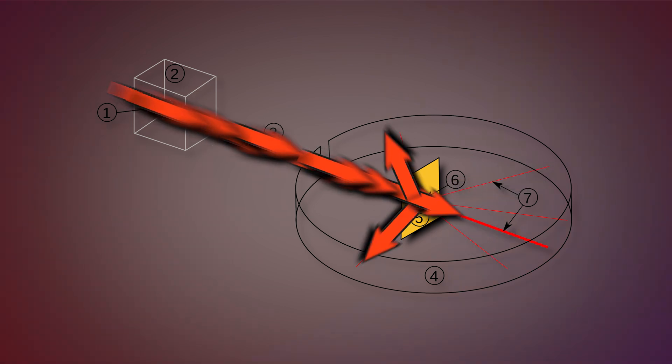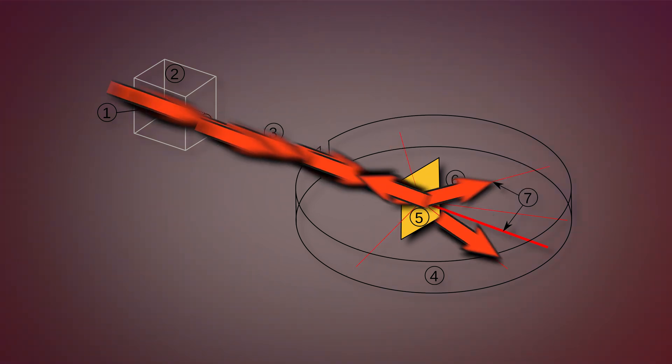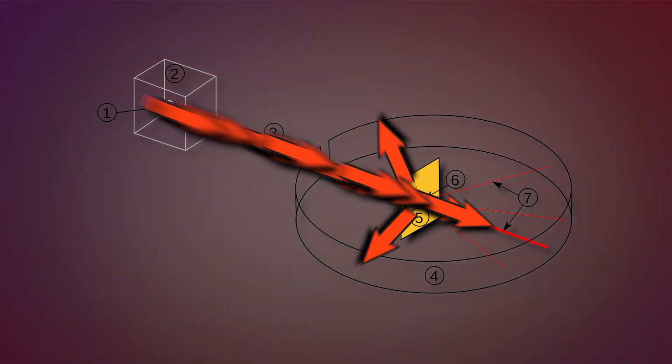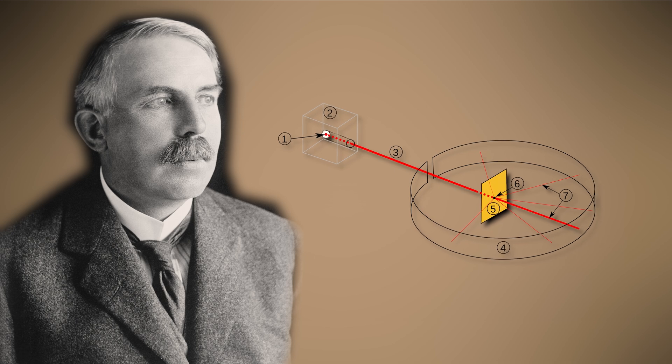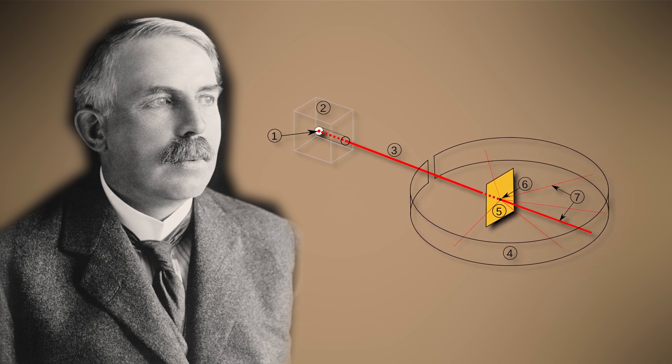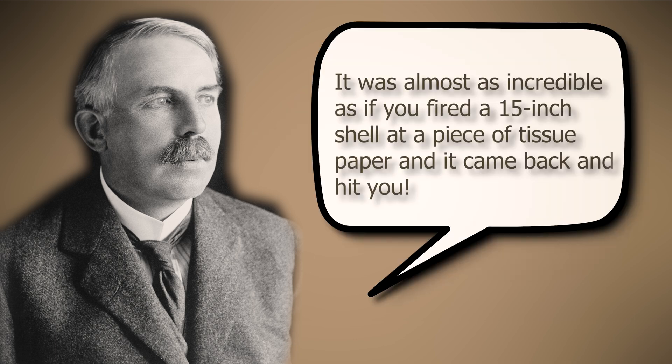Approximately one out of every 20,000 alpha particles had experienced a deflection of 45 degrees or greater. On observing the unexpected scattering of alpha particles in his gold foil experiment, Ernest Rutherford famously remarked: It was almost as incredible as if you fired a 15-inch shell at a piece of tissue paper and it came back and hit you.